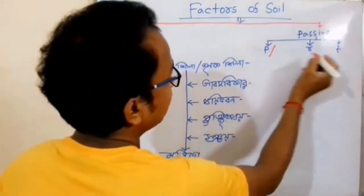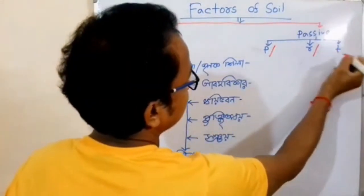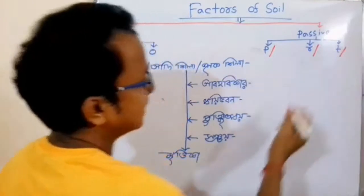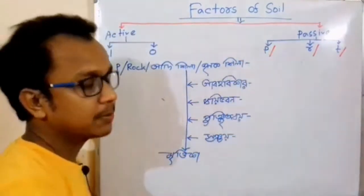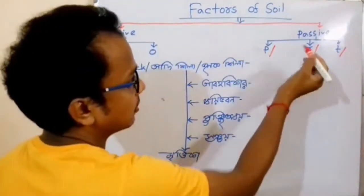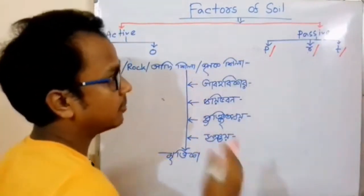The three passive factors are: 1. P, 2. R, 3. T. P is the parent material, R is the relief, and T is the time.